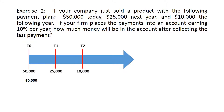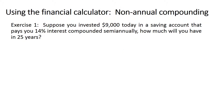For the 25,000, enter PV = -25,000, N = 1 (one period from t1 to t2), I = 10%, and solve for FV = 27,500. As for the 10,000, it's the last payment and we withdraw the whole amount at t2, so it stays 10,000. Getting the summation of all these future values gives the answer for this exercise: 98,000.